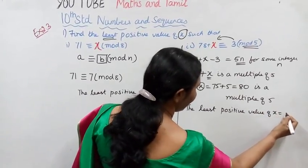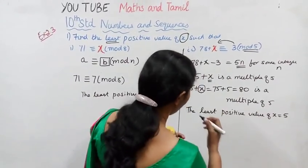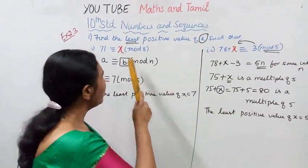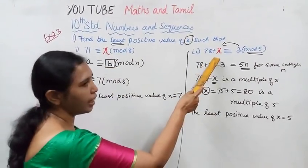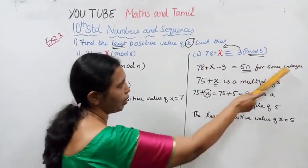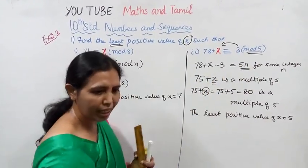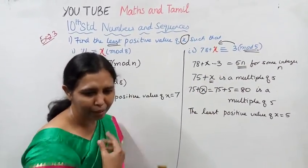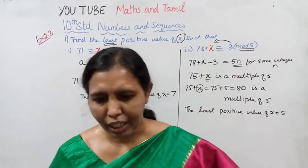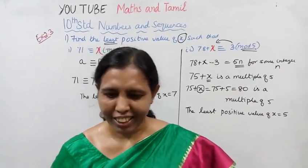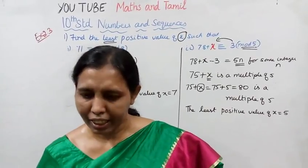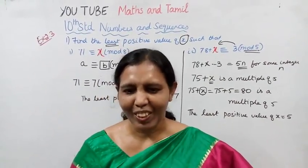X is 5 in the second sum. The same way the mod 5, for some integer y, you can calculate. This channel helps you to get 100 marks, so subscribe to the channel and hit the bell button.